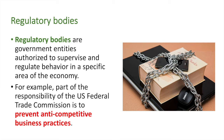One thing they may do is look into mergers to examine whether the combined company would unreasonably restrain competition. If it was determined to be so, then the merger may be blocked. Additionally, they may determine that a firm is behaving in an uncompetitive manner and rule against such behaviour. A great example of the FTC's intervention was the Microsoft case.